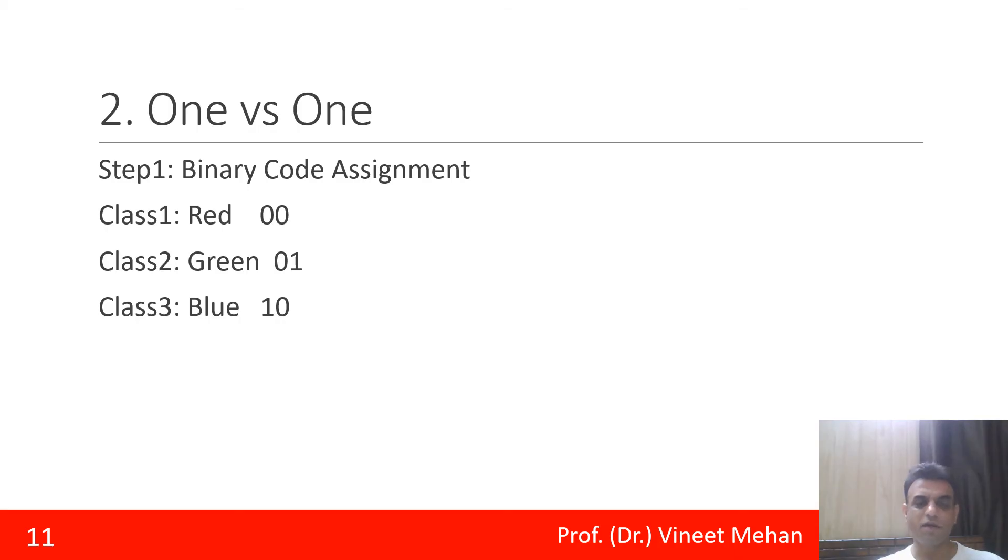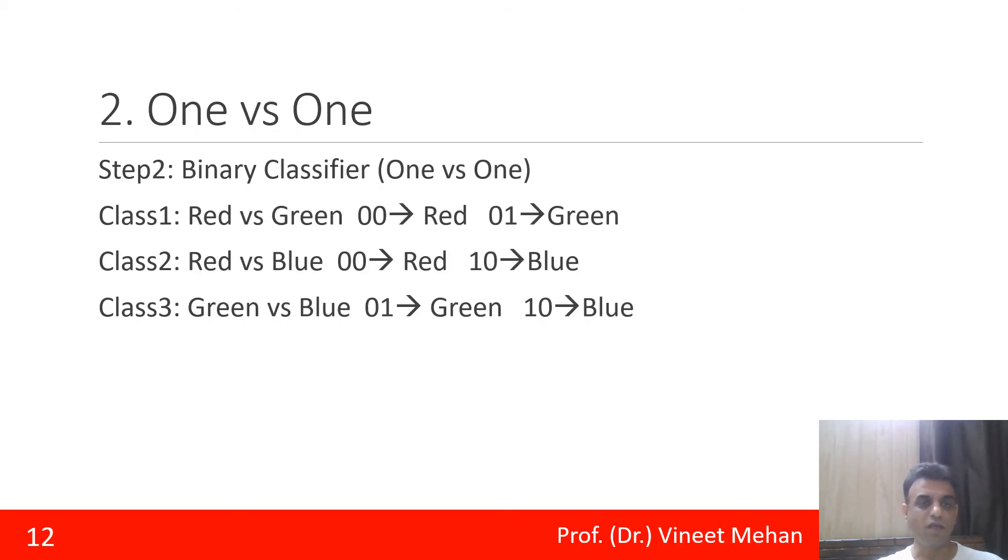Then is for binary classification one versus one. So for class one, red versus green, what is red? Red is 00. What is green? Green is 01. Similarly, red versus blue: 00 is red and 10 is blue. Similarly, green versus blue: green is 01 and blue is 10. We could refer to step number one for this.